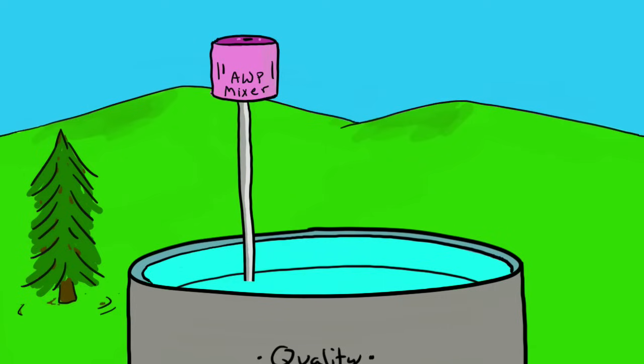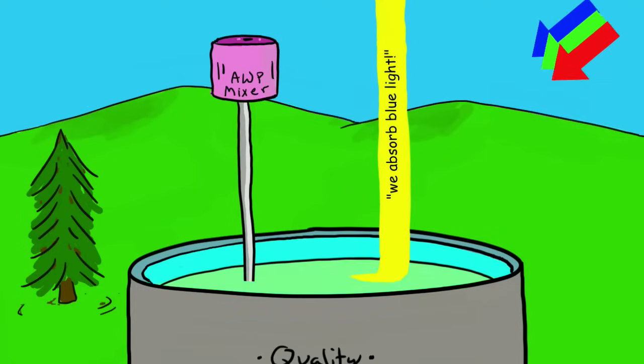Now let's start adding some yellow. How do the yellow pigments feel about blue light? Answer, they absorb that blue light.